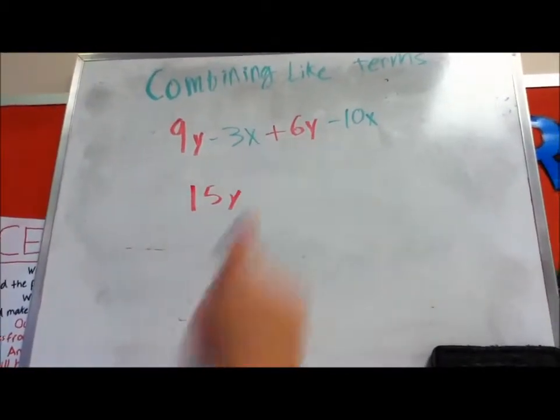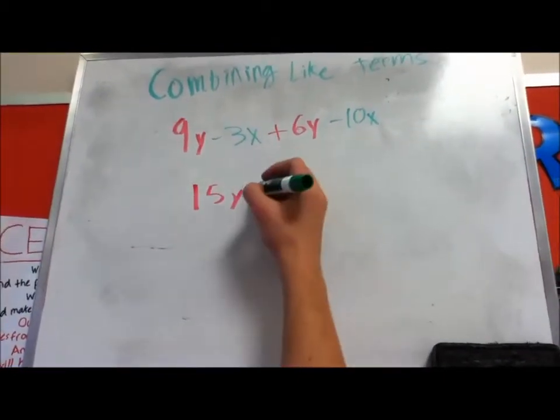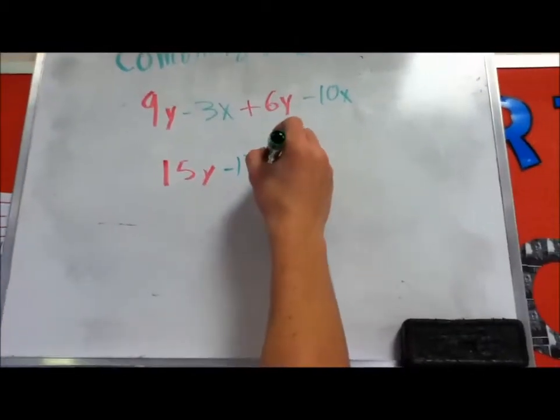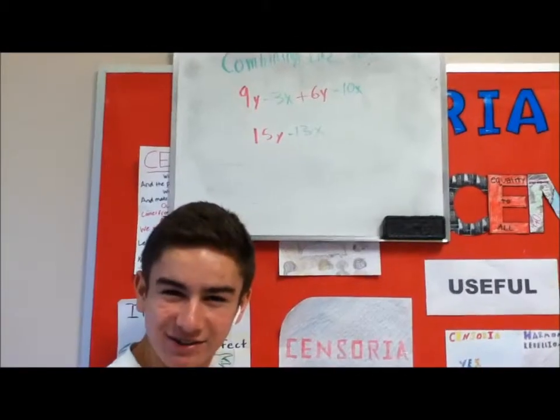You're taking away 3 apples and you're taking away 10 apples. So you got negative 13 green apples. Thanks for watching.